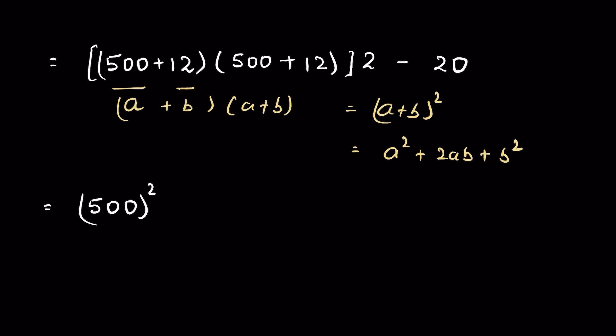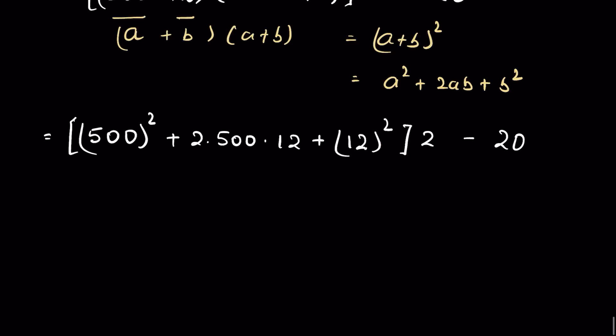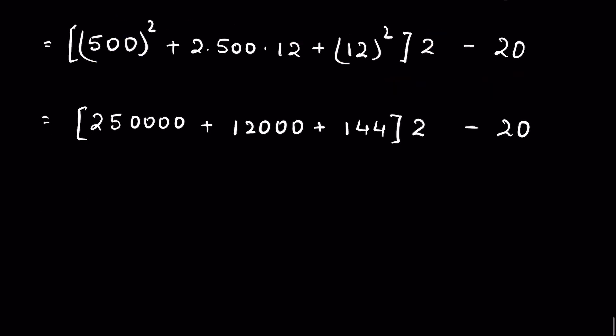500 square is 250,000, plus 5 times 2 is 10 times 12 is 120 with 2 zeros, plus 12 square is 144, then whole times 2 minus 20. Now let's add it, so 262,144 times 2 minus 20.